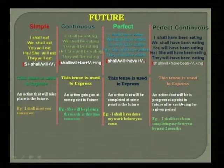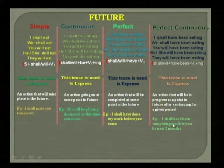I shall have been completing my first year by next two months. This is an example of the future perfect continuous tense, expressing an action continuing up to a given point in the future.